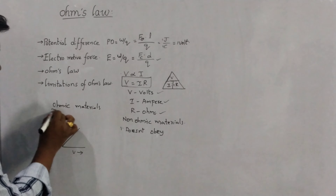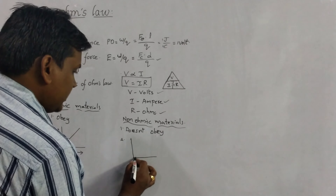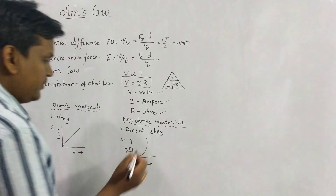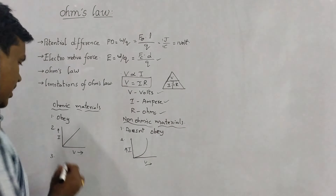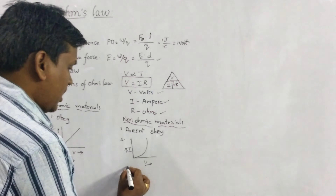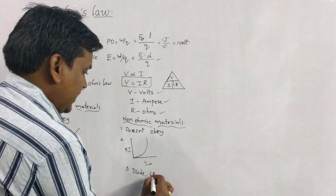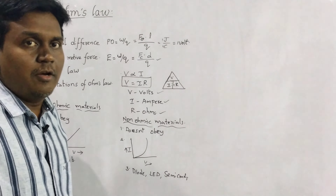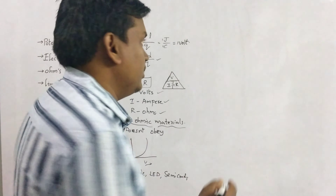Here V is the potential difference, measured in volts. I is the current, measured in ampere. And R is resistance, measured in ohms. If you consider the relation between voltage, current and resistance using a triangle — V at the top, I and R at the bottom — the multiplication is at the bottom and division applies for the top. So V equals I into R, I equals V by R, and R equals V by I. This is the relation between V, I and R.